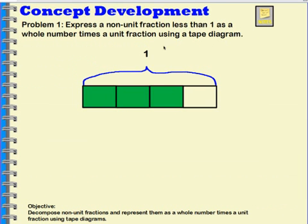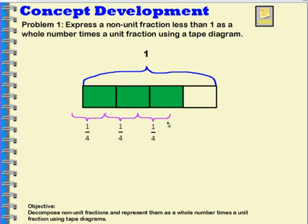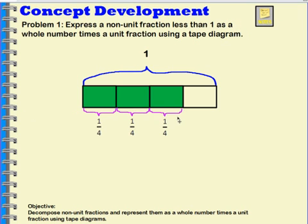We're going to begin by looking at a tape diagram that shows that one whole is made up of four parts, and this tape diagram has three of those parts shaded. My unit fraction for this one is going to be one-fourth, and as you can see, I have three of those. So I have three one-fourths.